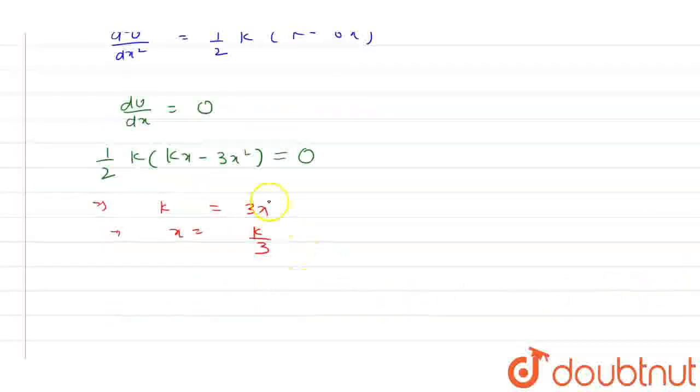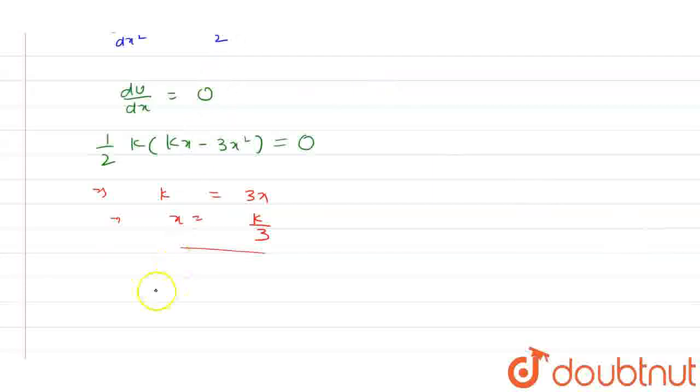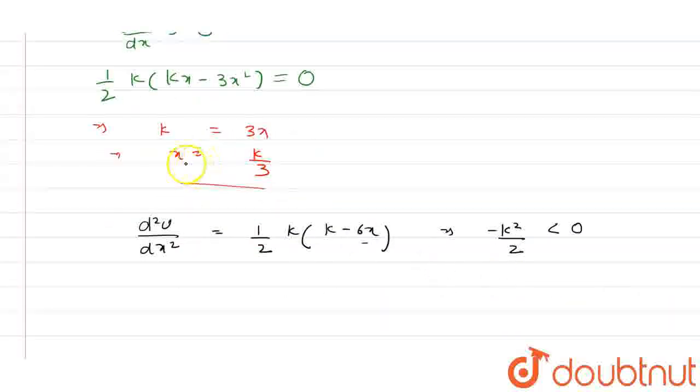Now to check if X equals K/3 is maxima or minimum, we put the value of X equals K/3. So we get d²U/dX² equals 1/2 K, K minus 6X. Now by putting the value of X we get minus K squared by 2 that is less than 0. So we can say that at X equals K/3 it is maxima.